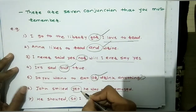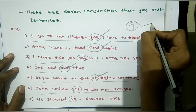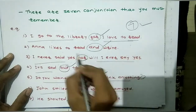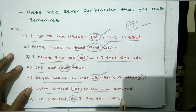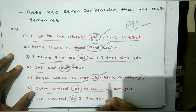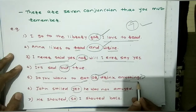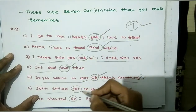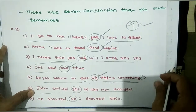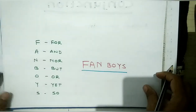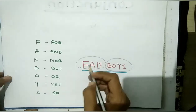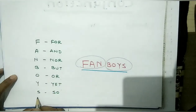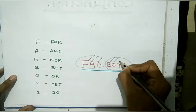So the 7 most important conjunctions in grammar are: for, and, nor, but, or, yet, and so. To remember them easily, use the trick: FANBOYS. F is for 'for,' A is for 'and,' N is for 'nor,' B is for 'but,' O is for 'or,' Y is for 'yet,' and S is for 'so.' FANBOYS — this completes all 7 conjunctions.